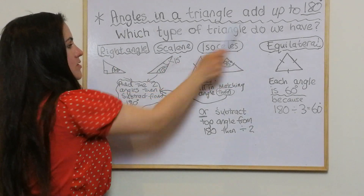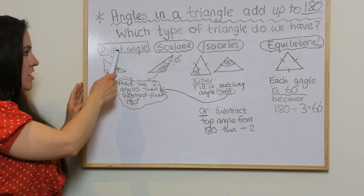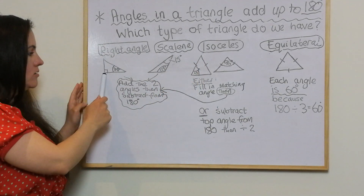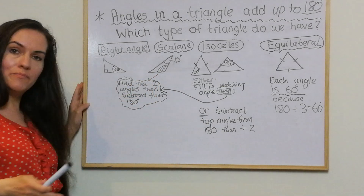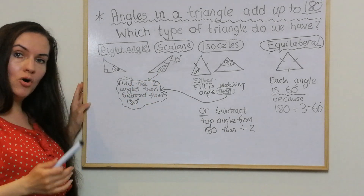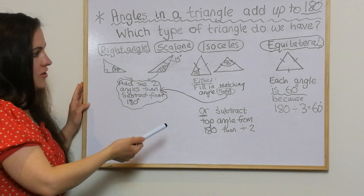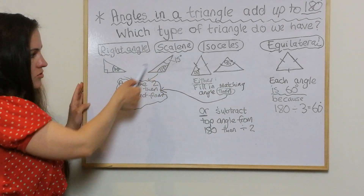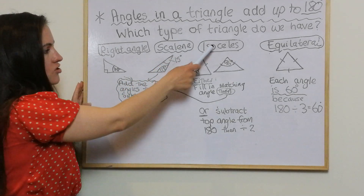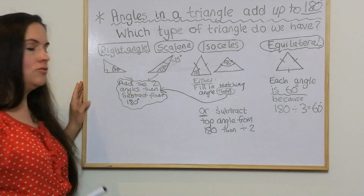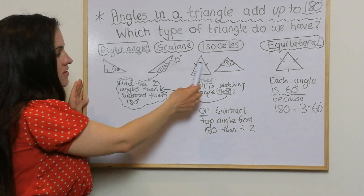We always have to consider what type of triangle we have. There are really four different types. We can have a right angle triangle, which looks like this. We can have a scalene triangle, which you may or may not be familiar with — all it means is that all the sides and angles are different and it's not a right angle triangle, so it just doesn't fall into any of the other categories.